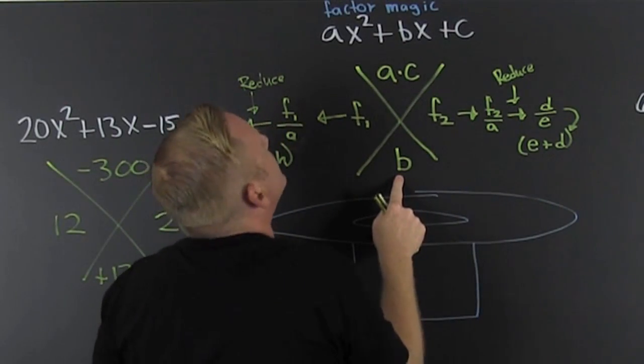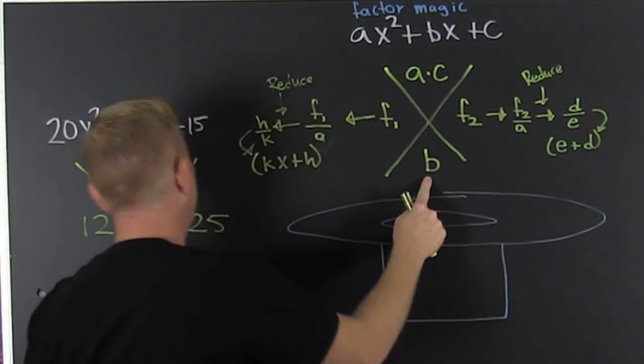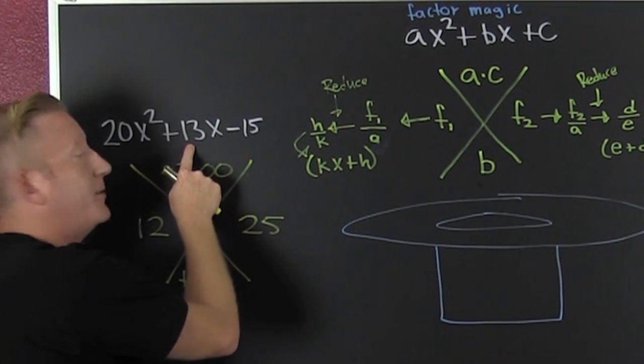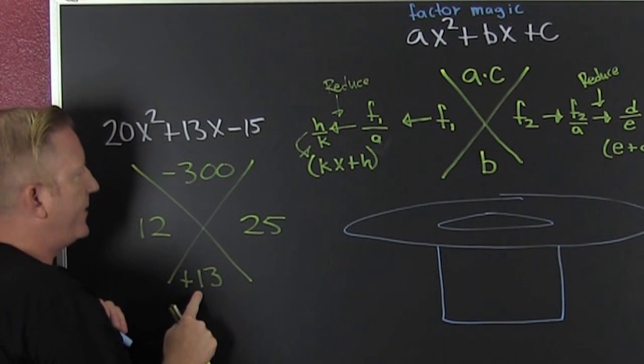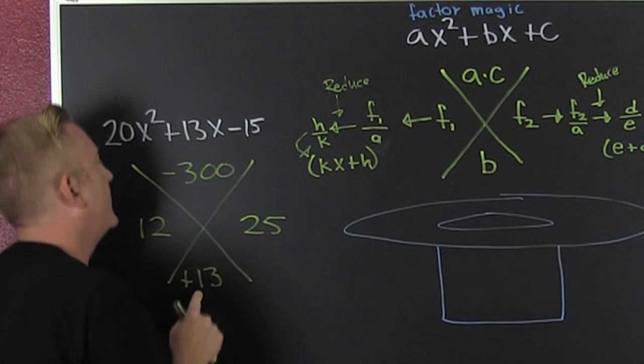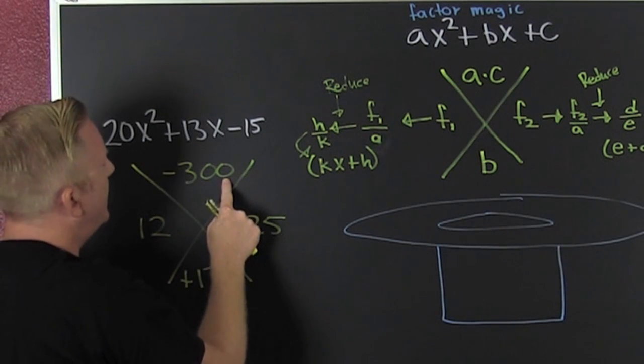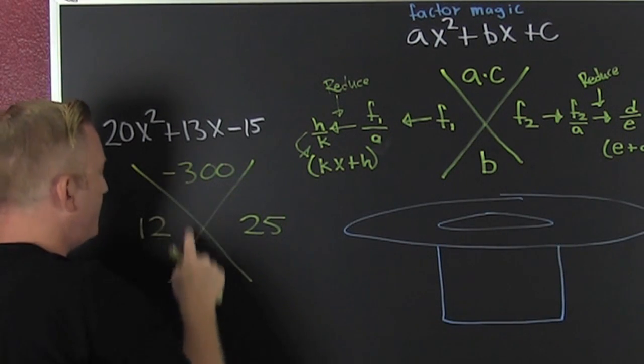And then what? We're going to put our b, our middle term, down in the bottom. What is that? Our middle term over here is 13. So I'm going to put a 13 down there in the bottom. So now what are we doing?